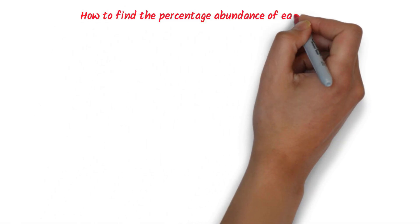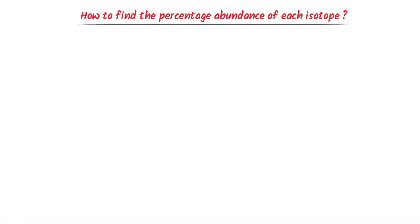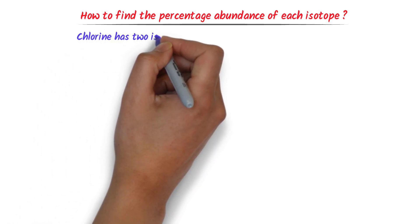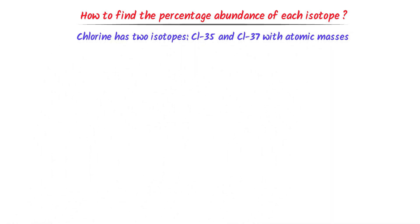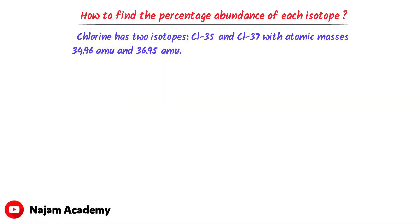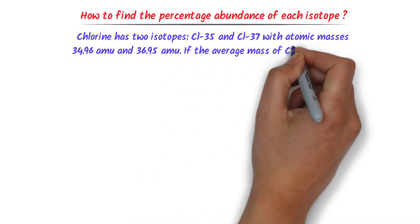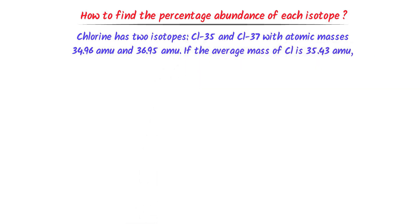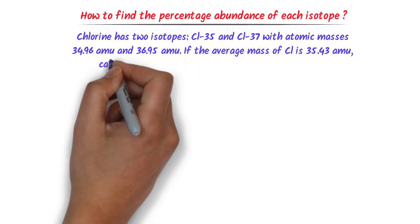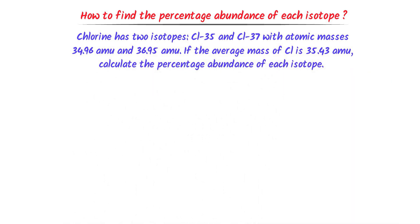How to find the percentage abundance of each isotope? Consider this problem. Chlorine has two isotopes, Chlorine-35 and Chlorine-37, with atomic masses 34.96 amu and 36.95 amu respectively. If the average atomic mass of Chlorine is 35.43 amu, calculate the percentage abundance of each isotope.